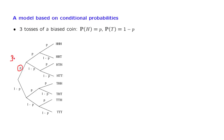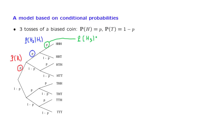These numbers are to be interpreted as probabilities or conditional probabilities. For example, one number is interpreted as the probability of heads in the first toss, an event we denote as h1. Another number is the conditional probability of heads in the second toss given that the first toss resulted in heads. And similarly for the conditional probability of heads in the third toss, given that both the first and second tosses resulted in heads.